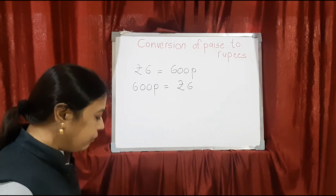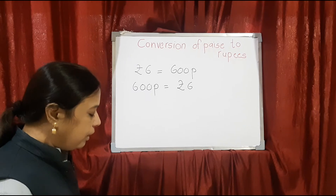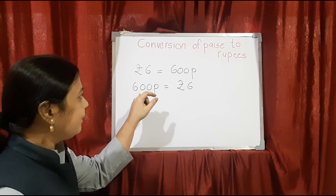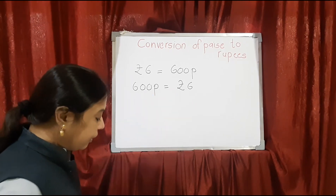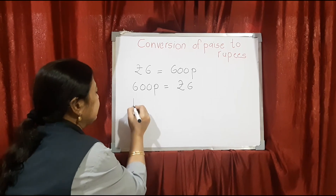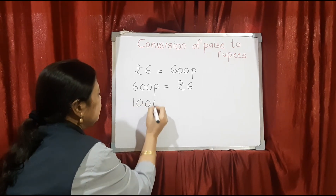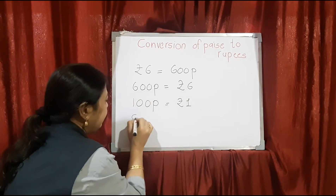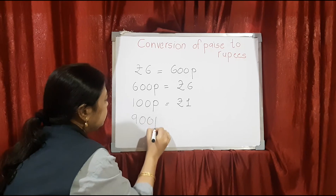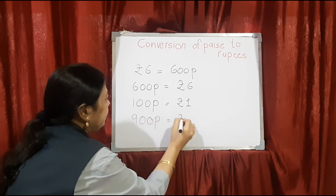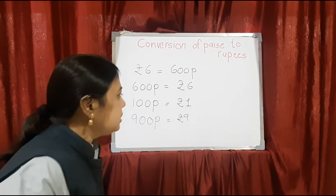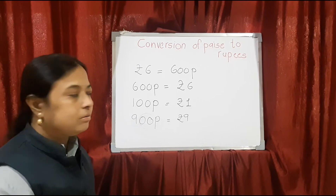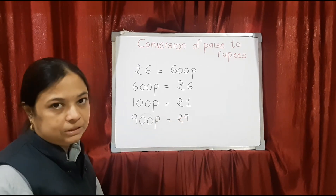In exercise number 4, all paise values are given. 600 paise equals 6 rupees. Next, 100 paise makes rupee 1. Next is 900 paise, which makes rupee 9. To convert paise to rupees, just cancel the two zeros at the end.